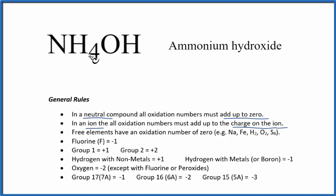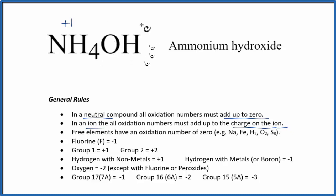NH4, the ammonium ion, has a charge of one plus, so the oxidation number for the whole NH4 ion is plus one. The hydroxide has a charge of one minus, so the oxidation number for the entire hydroxide ion is minus one. We can see these oxidation numbers add up to zero because it's a neutral compound.